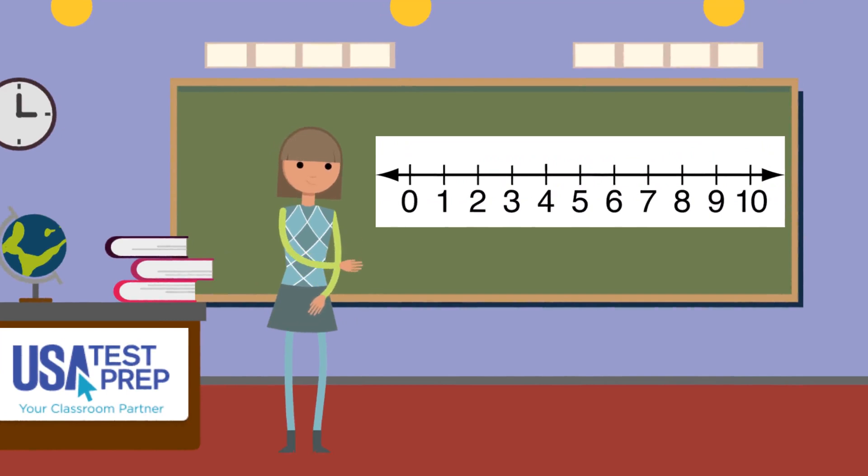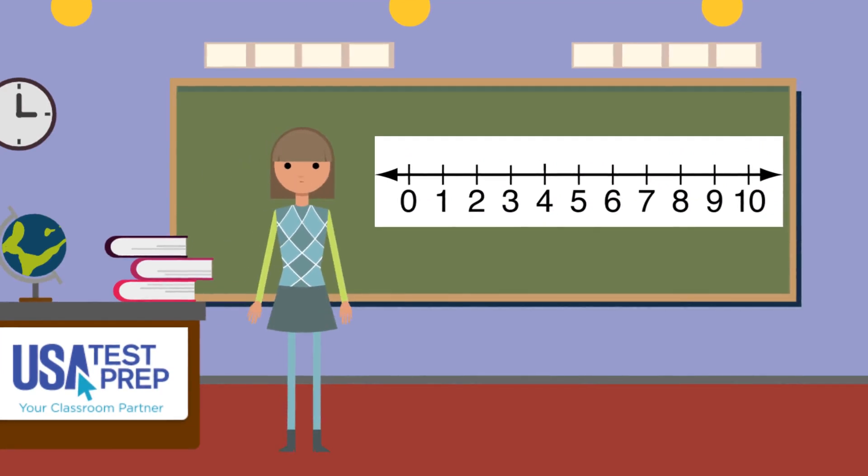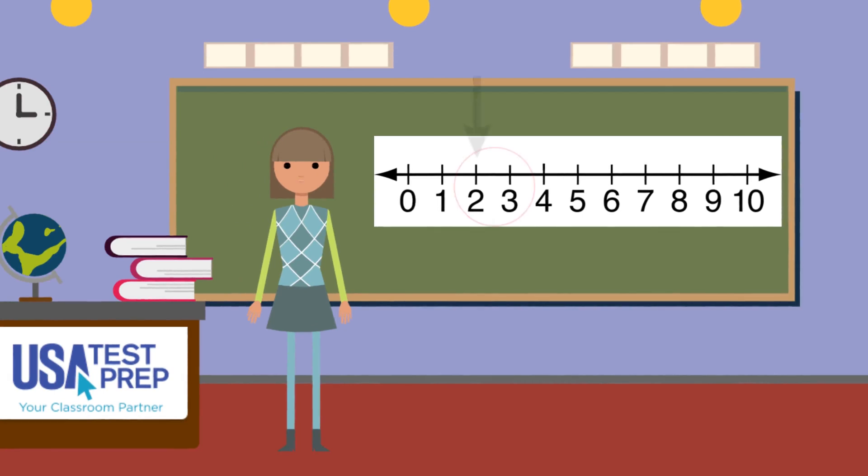This is a number line. They can start and end with any number, but this number line starts with 0 and ends with 10. Notice the numbers in the number line are equally spaced apart. The distance between 2 and 3 is the same length as the distance between 7 and 8.